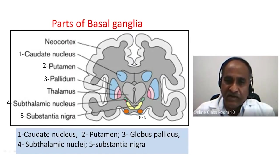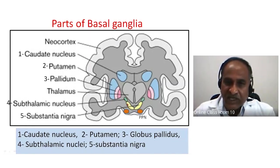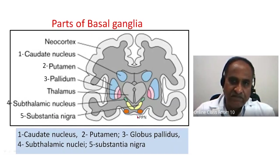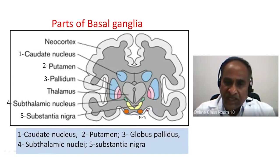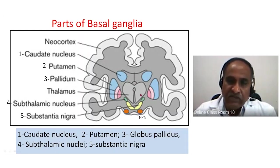We also have the subthalamic nucleus and the substantia nigra, along with the pontopeduncular nucleus. To summarize, the five main parts are: caudate nucleus, putamen, globus pallidus, subthalamic nucleus, and substantia nigra — numbered one through five. The thalamus and pontopeduncular nucleus receive outputs from the globus pallidus interna (GPI).